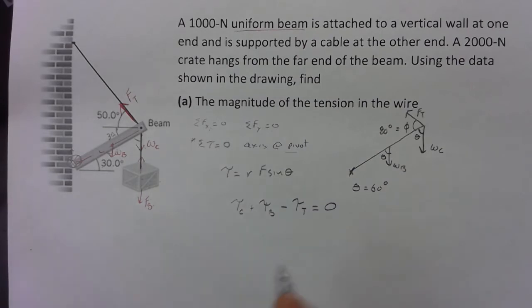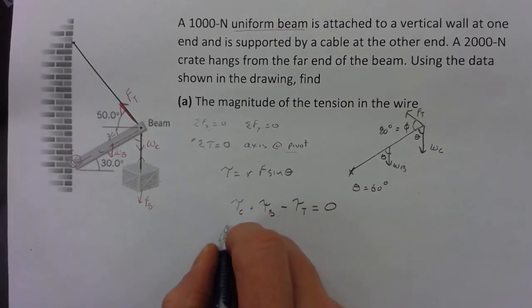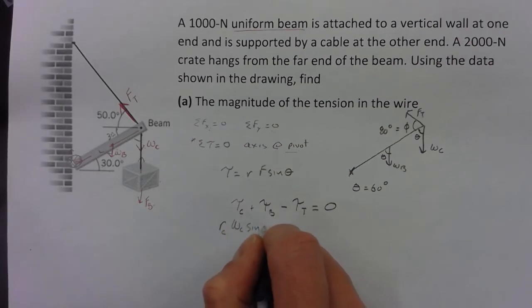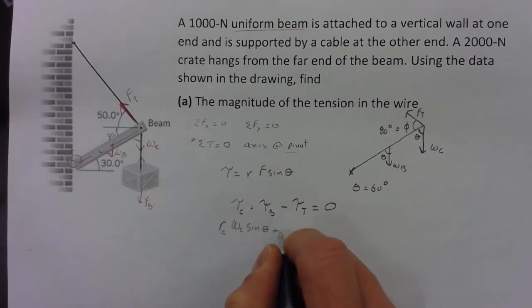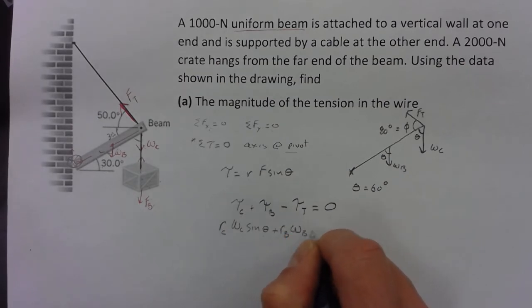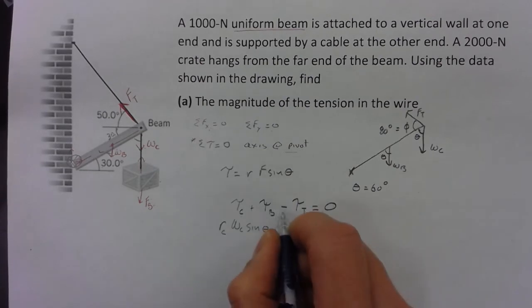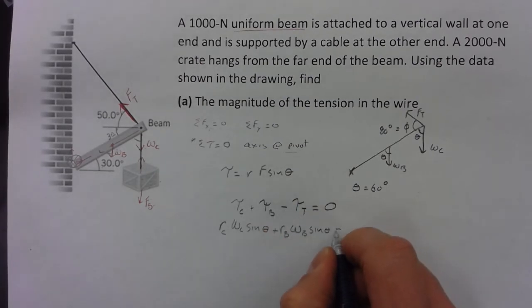Now since I took my axis at the pivot, that's the distance I have to measure my radius from, my lever arm from. For the crate, I'm going to have r for the crate plus the force of the crate times the sine of the angle that it makes, plus r for the beam, the weight of the beam, the sine of theta.